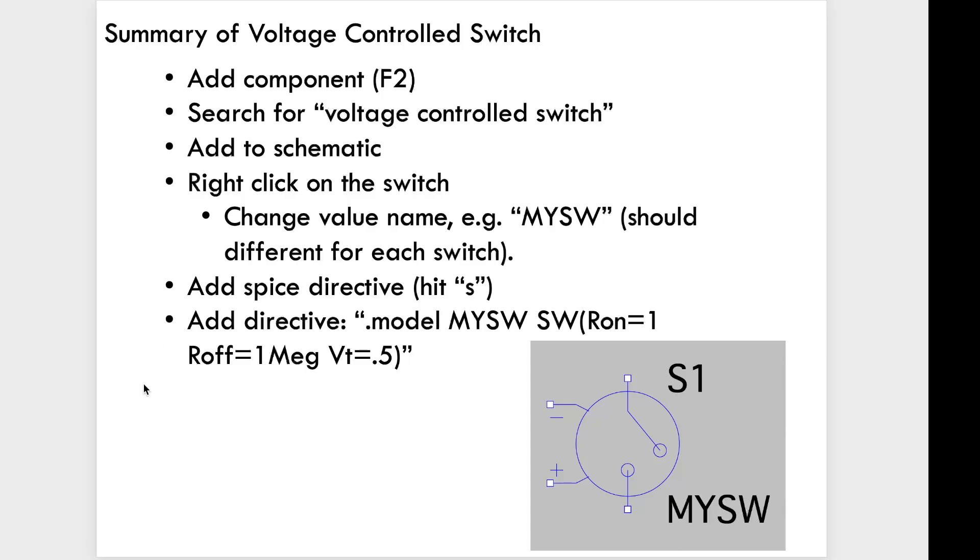Then you must add a Spice directive that is related to that switch. That Spice directive is going to appear on your schematic just like your transient simulation Spice directive will. And in that directive, you're going to need something like this that says dot model. That's telling LTSpice how to model your switch. Then the name of your switch. That's the name that you selected for the value up here.